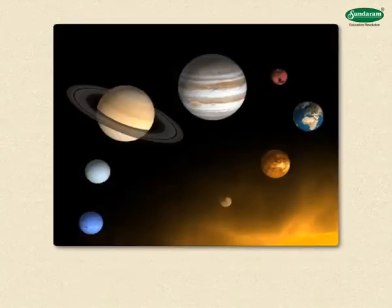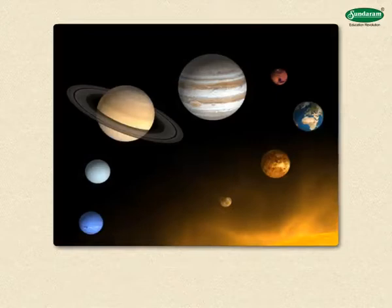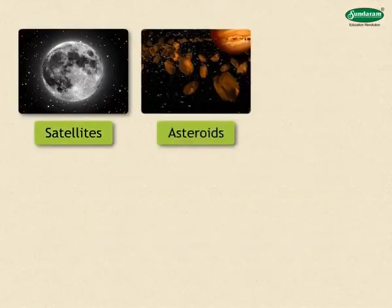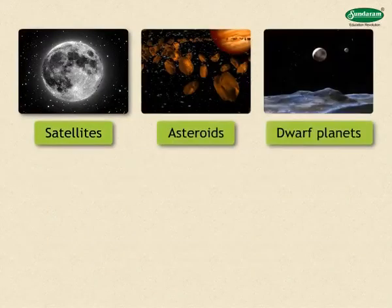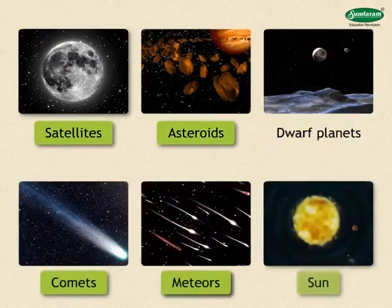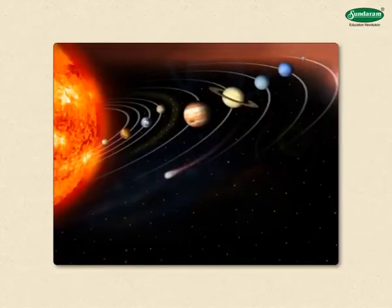Eight planets, including the Earth, satellites, asteroids, dwarf planets, comets, meteors and the sun together constitute our solar system. Let us learn about the members of the solar system.